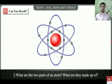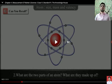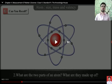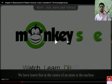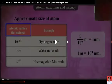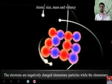Our next question is: what are the two parts of an atom and what are they made up of? An atom is made up of two parts. The first part is the nucleus, which contains protons and neutrons. The second part is called the extra-nuclear part, where orbits are present and electrons continuously revolve.